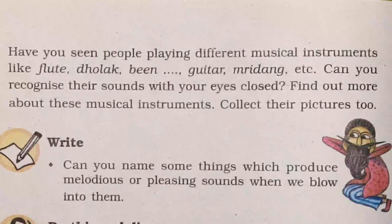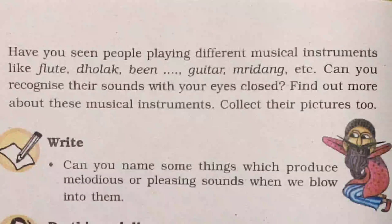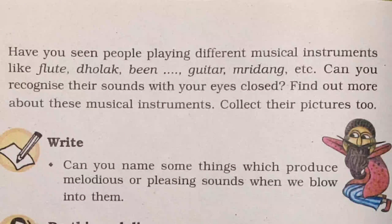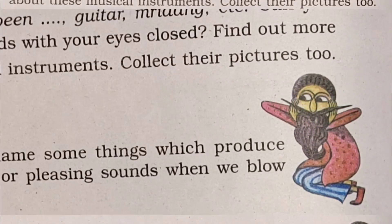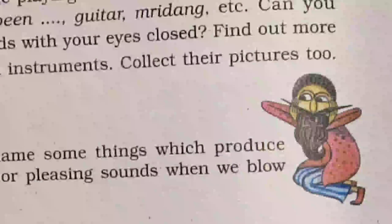On page 143: 'Blow in different ways — make whistles of the things given below. Write in a sequence from the loudest to the softest whistle.' The sequence is: the cap of a pen, putting two fingers in mouth, wrapper of a toffee, a balloon, and a leaf.